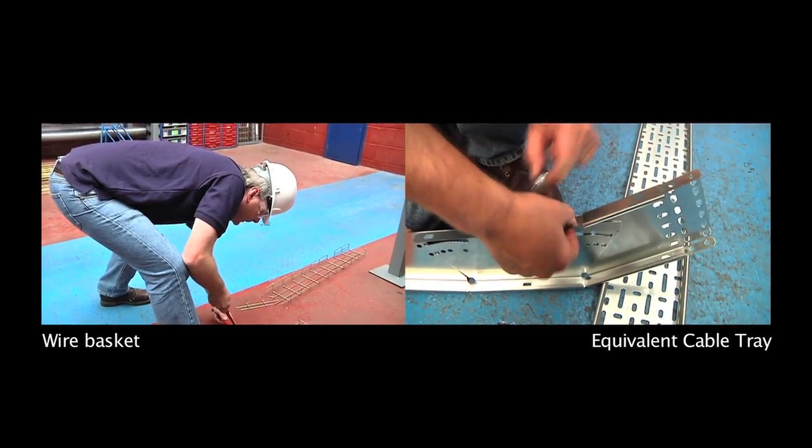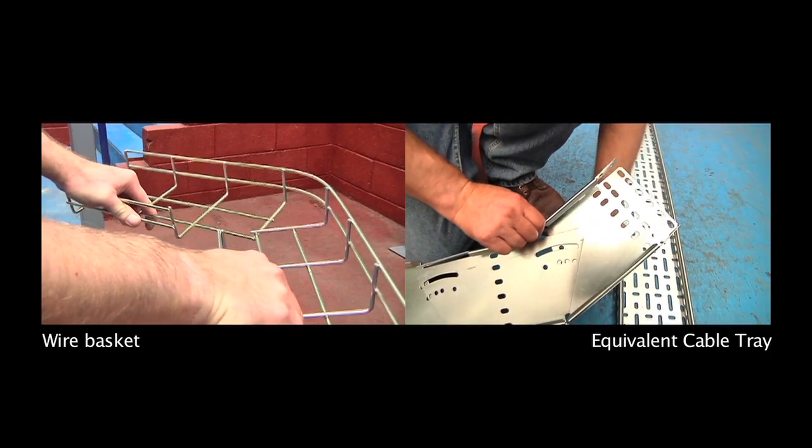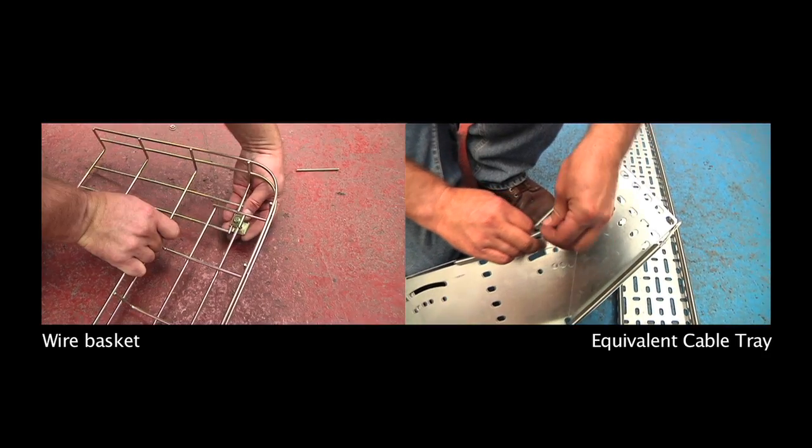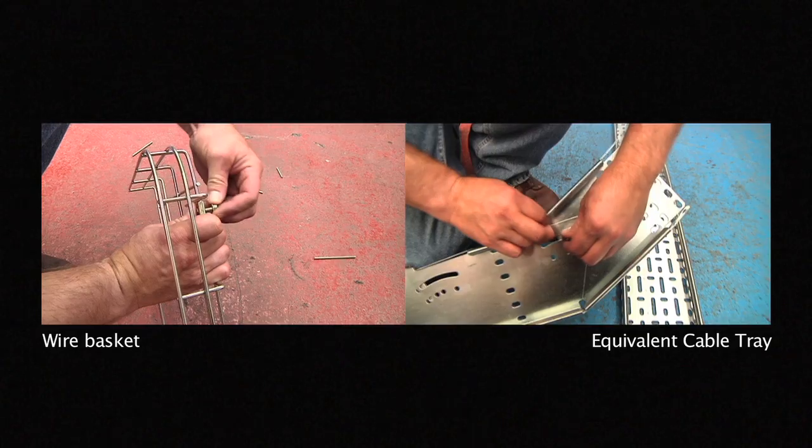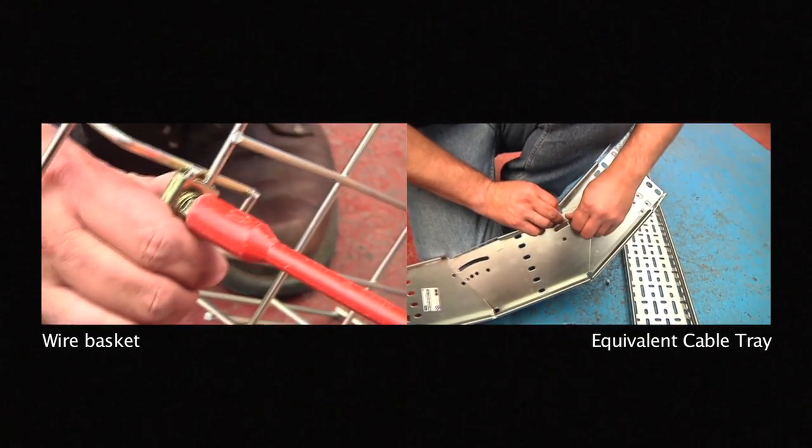Once cut the wire basket can be easily bent into shape without the use of any tools. The 90 degree bend can then be held in shape using just one reinforced joint clamp.